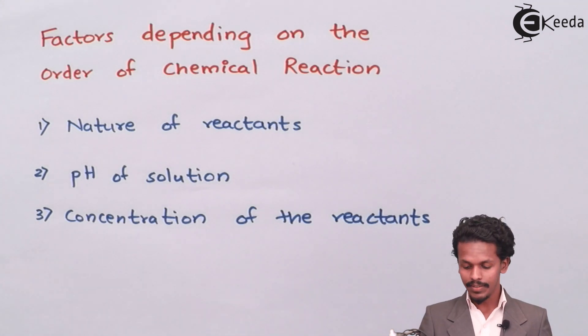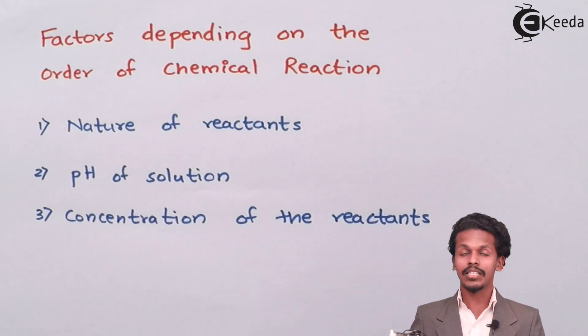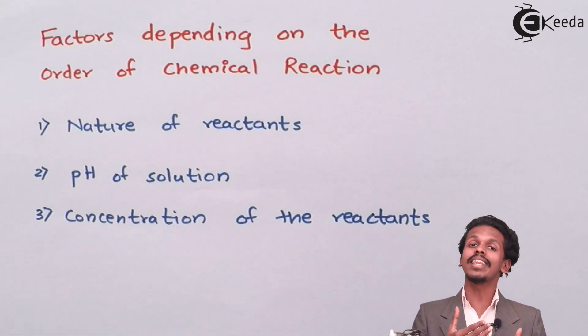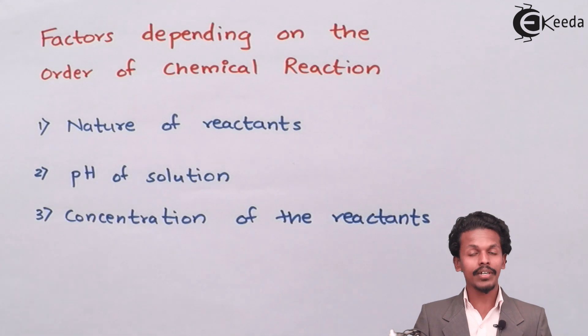The second factor is the pH of solution. The pH of solution can be acidic, basic, or neutral in nature. These factors also affect the rate of reaction, and because of that, the order of reaction will have particular coefficients X and Y. A particular value will be there depending on this criteria.